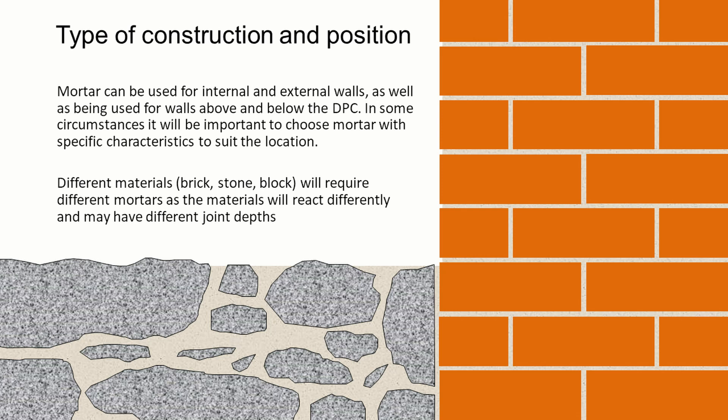We can build both internal and external walls out of masonry, so the mortar used for those walls may be different. We also have to think about whether the wall is going to be wet — i.e. below the DPC or above it — and in some circumstances it will be important to choose mortar with specific characteristics to suit that location. Different materials — brick, stone, concrete block — will also require different mortars, as the materials react differently and may have different joint depths to fill.